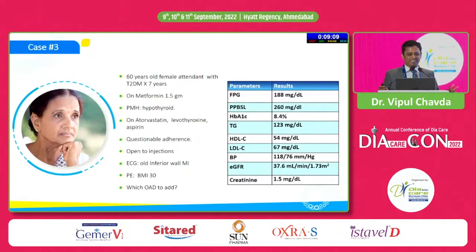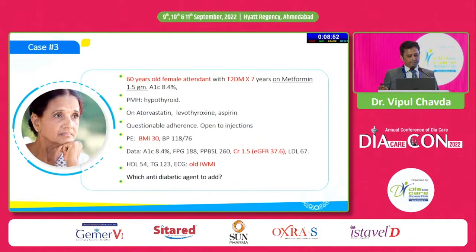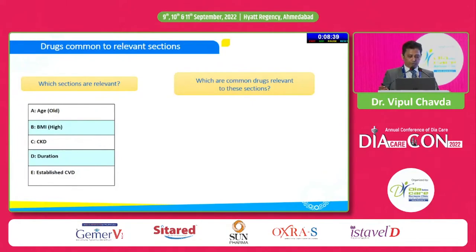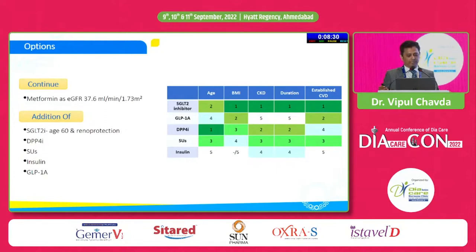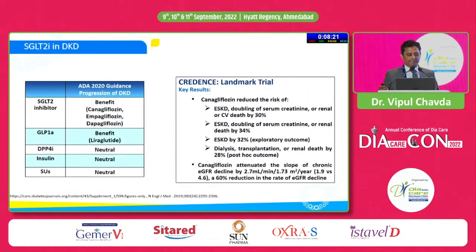Case 3: a 60-year-old female, 7 years of diabetes, on metformin 1.5g, hypothyroid on levothyroxine, also on atorvastatin and aspirin, questionable medication adherence, open to injectable therapy, inferior wall MI in the past, BMI 30. Her creatinine and eGFR indicate CKD. Key factors: old age, high BMI, CKD, 7-year duration, established ASCVD. Options: SGLT2 inhibitor, GLP-1 RA, DPP4 inhibitor, sulfonylurea, and insulin. For CKD, there is now robust evidence that SGLT2 inhibitors slow progression of albuminuria and eGFR decline. GLP-1 RA is also beneficial; DPP4, sulfonylurea, and insulin are neutral.